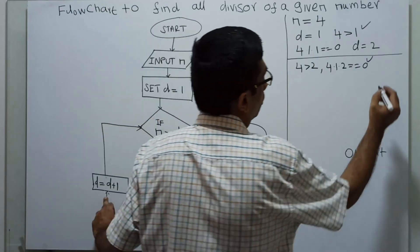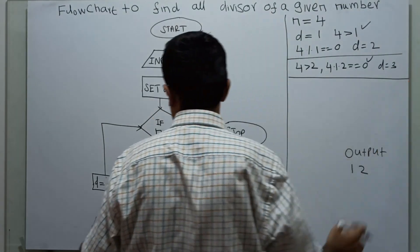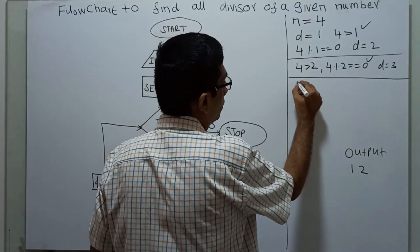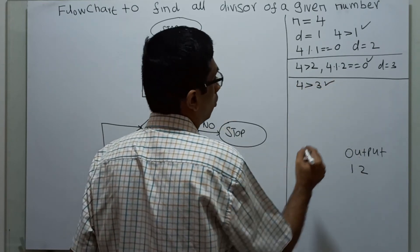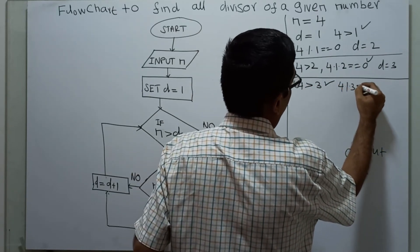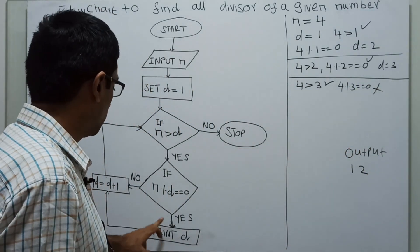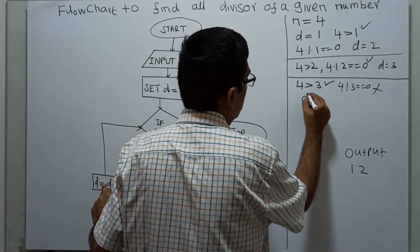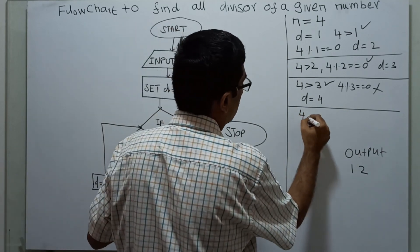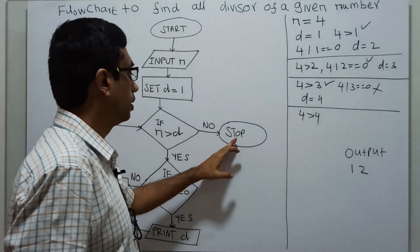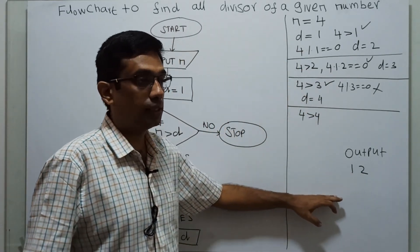Now d equal to d plus 1, d becomes 3. I am checking 4 greater than 3, which is true. Then 4 modulo 3. 4 modulo 3 equal to 0, which is false, because 4 modulo 3 the remainder is 1. In this case, d will get incremented by 1, so d becomes 4. Again checking condition, 4 greater than 4 is false. It will come out and the flowchart will stop. So output is 1 and 2. That means the divisors of 4 equal to 1 and 2.